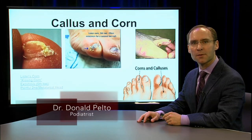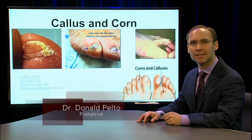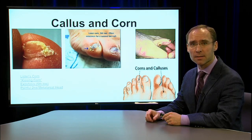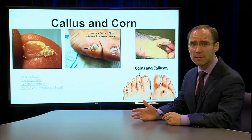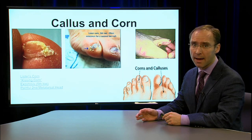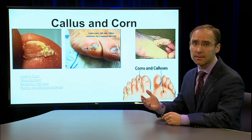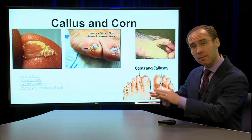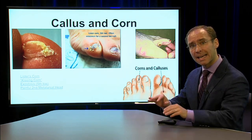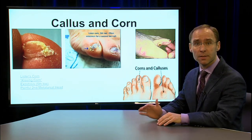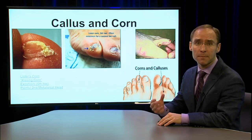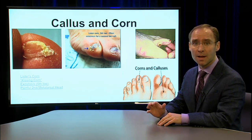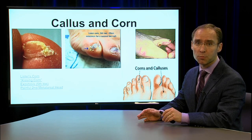Hi, and welcome to Healthy Living. I'm Dr. Donald Pelto, and today we're going to go over a topic called corns and calluses. Everyone has a question about what the difference is between a corn and a callus. Simply stated, a corn is either on the top of the toes or between the toes, and a callus tends to be on the bottom of the foot. But they're both the same thing — basically a thickening of the skin somewhere on your foot that causes problems.